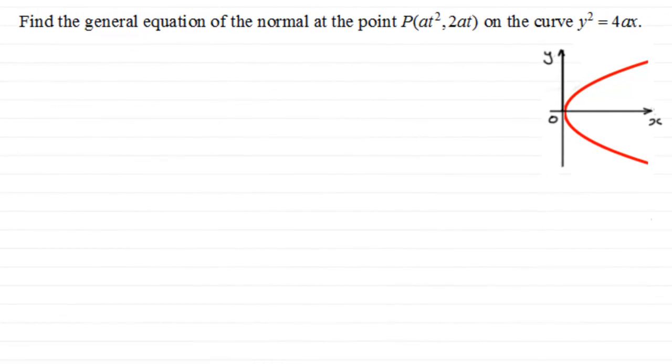In this example, I want to show you how we can go about finding the general equation of a normal at the point P, which has coordinates at squared, 2at, on this parabola with equation y squared equals 4ax.